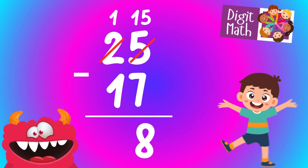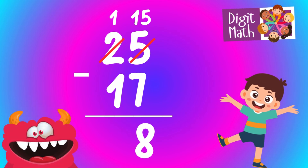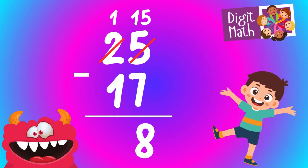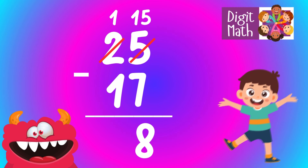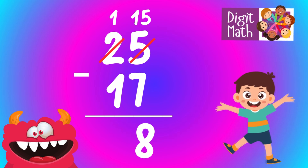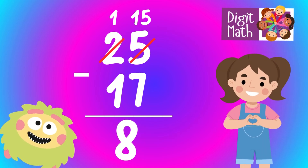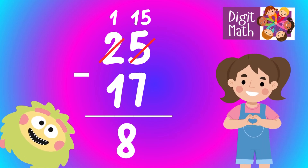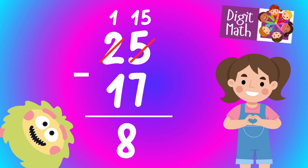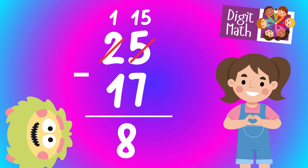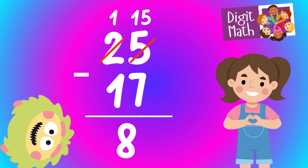In the tens column, we now have 1. Subtract 1 from 1, which equals 0, because we borrowed 1. So the final result is 25 minus 17 equals 8.